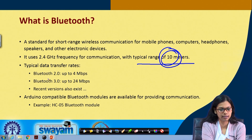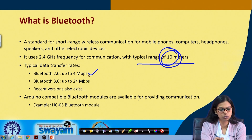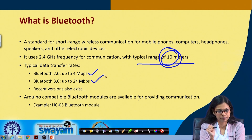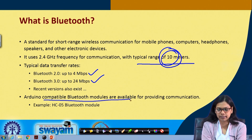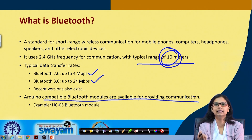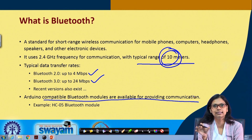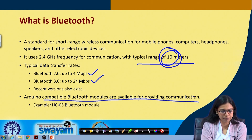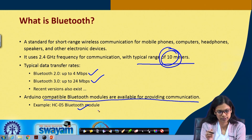The typical data transfer rate for Bluetooth 2.0 is up to 4 Mbps, and for Bluetooth 3.0 it is 24 Mbps. There are some more recent versions as well. Arduino-compatible and STM-compatible Bluetooth modules are available. You need to set the correct baud rate and use the correct commands. Examples include the HC-05 and HC-06 Bluetooth modules.